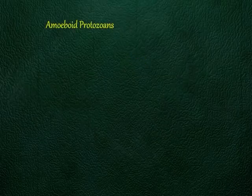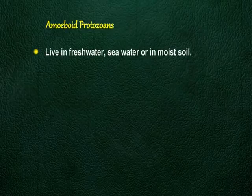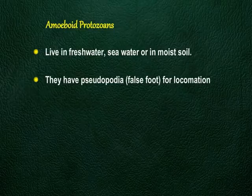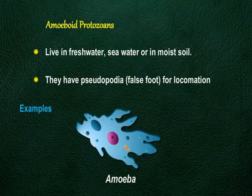Amoeboid protozoans live in freshwater, seawater, or in moist soil. They have pseudopodia for locomotion. Examples include amoeba and entamoeba.